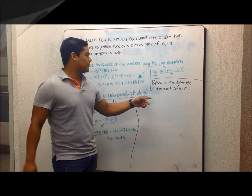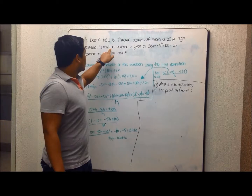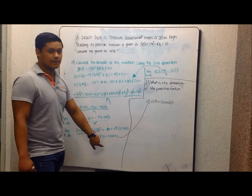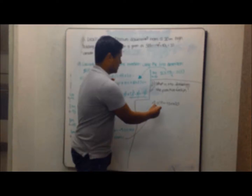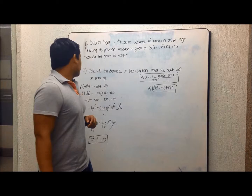The problem says a beach ball is thrown downward from 20 meters. The derivative of the position function gives the same result as point a. So the derivative of the position function is -10t + 10. Point c tells me to calculate the derivative of what I got in point a, which was -10t + 10.